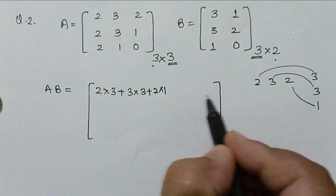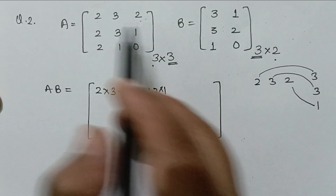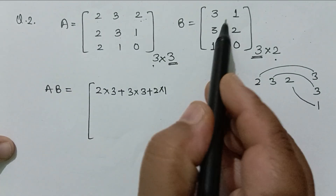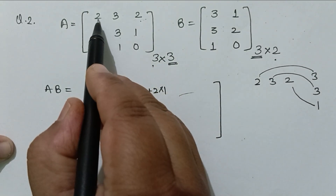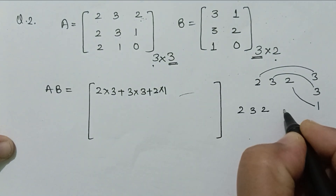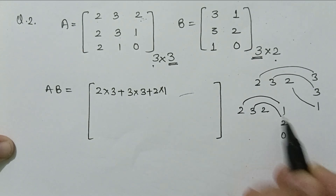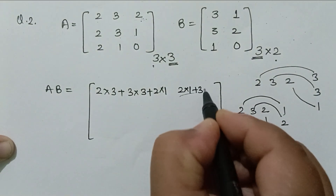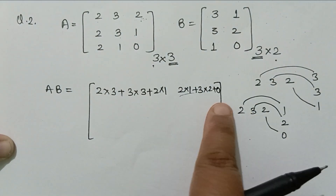For the second element, we multiply the first row with the second column. We first complete all multiplications with the first row and all columns of matrix B. For this element, we multiply row 1 with column 2: 2, 3, 2 with 1, 2, 0, giving 2x1 plus 3x2 plus 2x0. This is the second element.